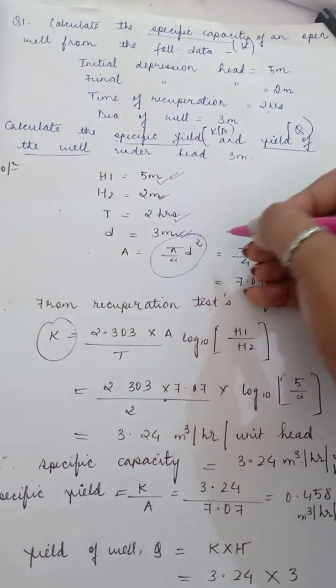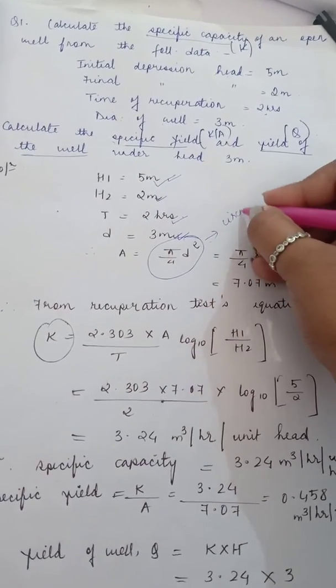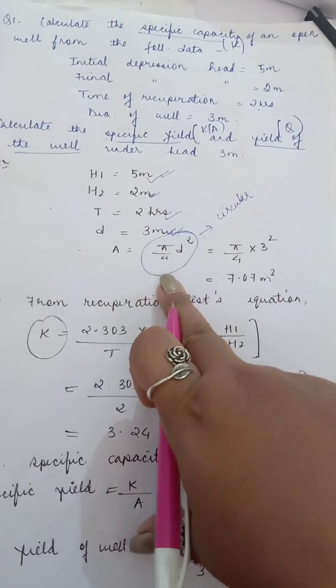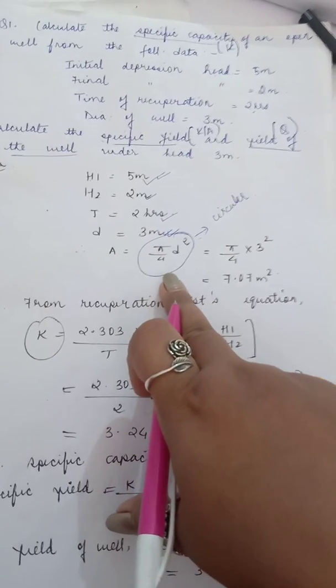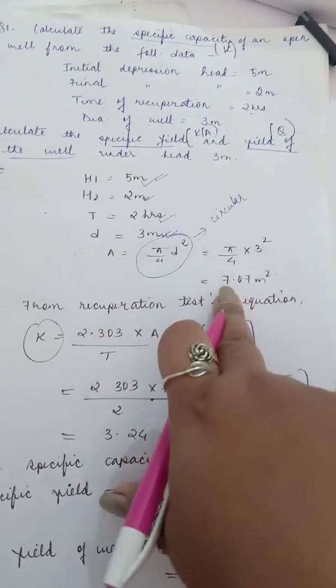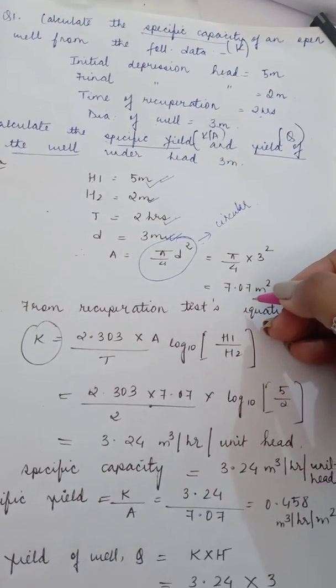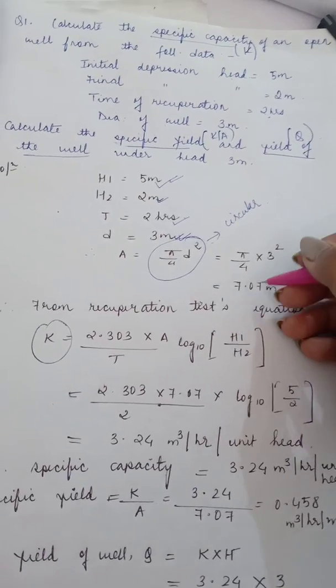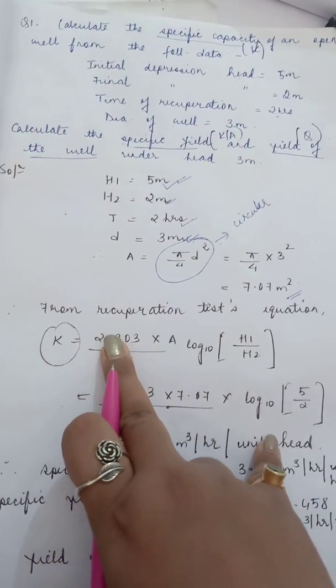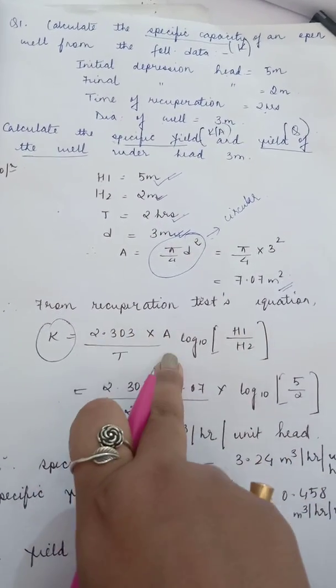We have found out area which is π/4 times d squared. This formula is used since this is a circular well. Wells are always circular, that's why we are using the area formula of a circle. So π/4 times d squared, d is 3 meters. We get 7.07 meter squared.